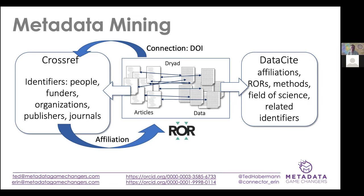We brought those affiliations back in and inserted them into the Dryad metadata. We then found RORs for those affiliations. Affiliation strings are generally pretty messy — they're not just 'University of Colorado at Boulder,' they could include all kinds of address information and different names for universities or organizations. Finding the RORs from a set of affiliation strings is a bit like finding funders in funder strings. We were able to find ROR identifiers for tens of thousands of affiliations in Dryad and added those in, and then those affiliations went to Datacite.